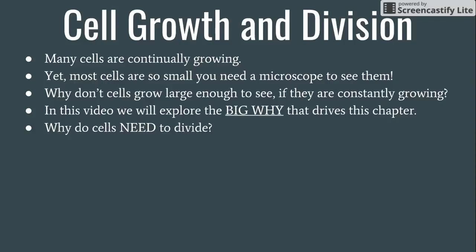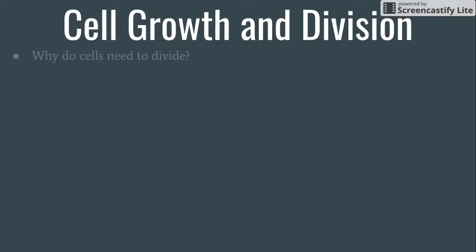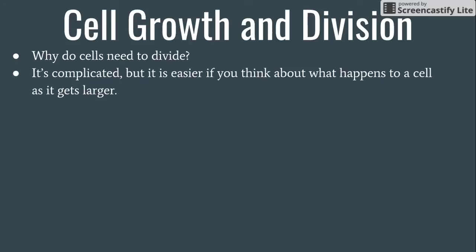I mean, that's our entire purpose of talking about this chapter, right? Cells grow, they eventually divide, and we have to take some time to talk about this idea of why. So when we start to explore this, we start to explore why cells need to divide, the long answer is that it's complicated. And what we'll try to do is go through and make it a little bit easier for you to think about what happens to a cell as it gets larger.